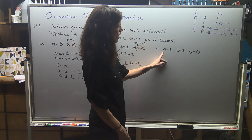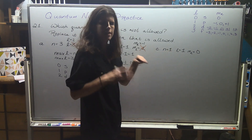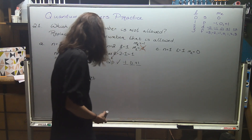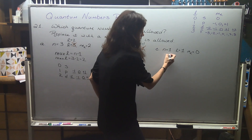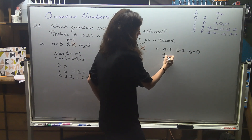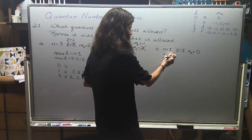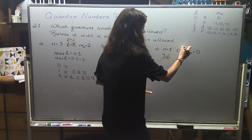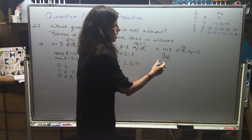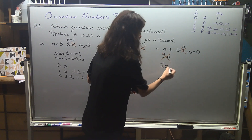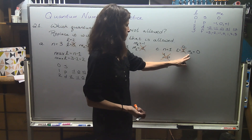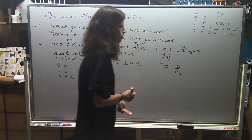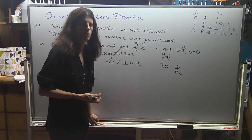Right off the bat I see this issue: the n value and the l value cannot be the same because max l always has to be one less. This combination would be a 1p orbital — never heard of that, p's don't come out until the second row. So we can change l to zero. If n equals 1 and l equals 0, then we're talking about a 1s orbital which exists, and ml equals 0 is fine because we only have one orientation in the s orbital.